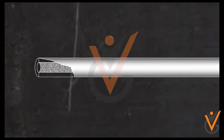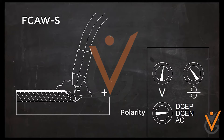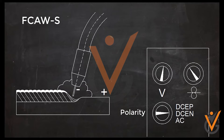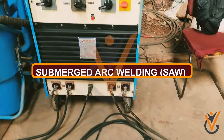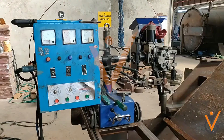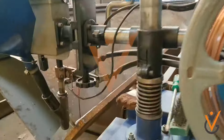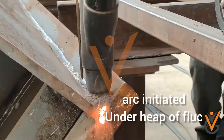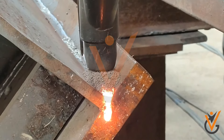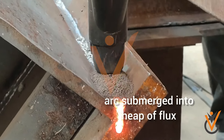Flux Core Arc Welding uses a continuously fed consumable flux core electrode and a constant voltage power supply, which provides a constant arc length. This process either uses a shielding gas or just the gas created by the flux to provide protection from contamination. Submerged Arc Welding (SAW) is a frequently used process with a continuously fed consumable electrode and a blanket of fusible flux, which becomes conductive when molten, providing a current path between the part and the electrode. The flux also helps prevent spatter and sparks while suppressing fumes and ultraviolet radiation.